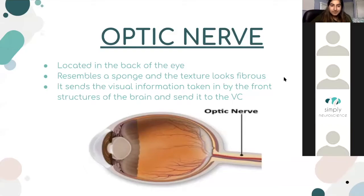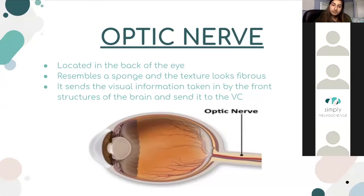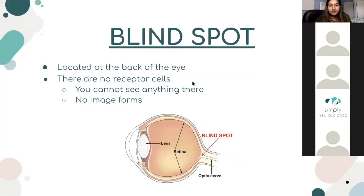My group covered the optic nerve. It's located in the back of the eye, and it goes straight to the visual cortex. In the picture it resembles something fibrous — it looks a bit like wires. As for its function, it sends visual information taken in by the frontal structures of the eye, like the lens, to the visual cortex to go through its first stage of processing.